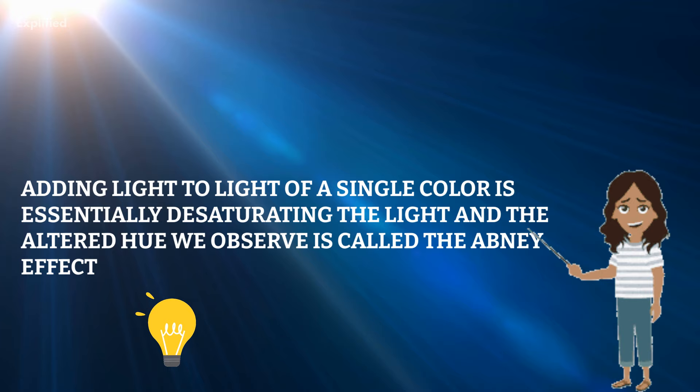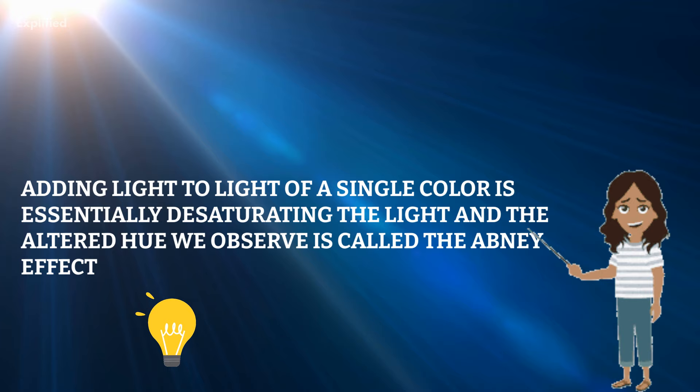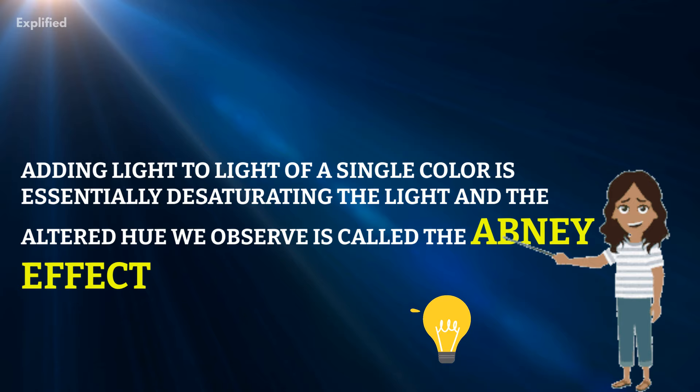The Abney effect is a perceptual change in hue that occurs when white light is added to monochromatic light. Adding light to light of a single color is essentially desaturating the light, and the altered hue we observe is called the Abney effect.